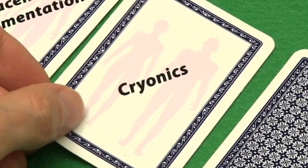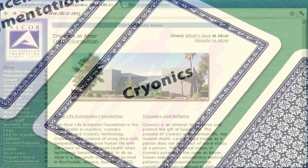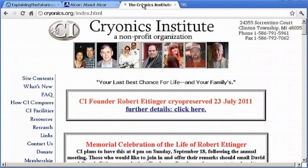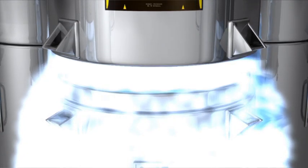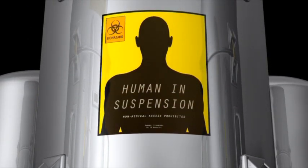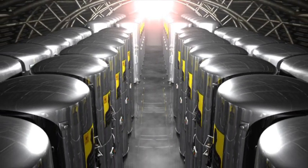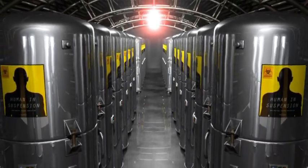A fourth potential life extension card is cryonics. Already some companies offer this service and will freeze a person's body in liquid nitrogen when they die. The hope is that in time techniques will be developed to enable their reanimation. This could involve the use of nanobots to cure whatever killed them and to repair any damage caused by the freezing process.